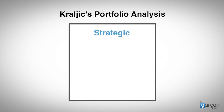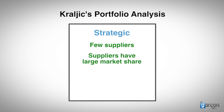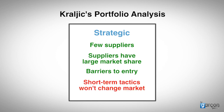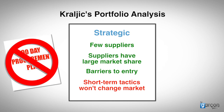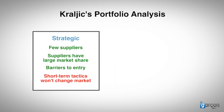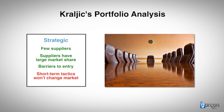The typical character of the supply market that makes it complex is that there are few suppliers, perhaps only one. The suppliers have large market share. There are barriers to entry that restrict market entry to competitors. Short-term tactics are not going to change the market. This is not the place for 90-day procurement plans. This is why Kralich wanted procurement on the agenda of the senior leadership team, so that the buying organisation could adopt longer-term strategies to try and change the market dynamics in favour of the buyer.